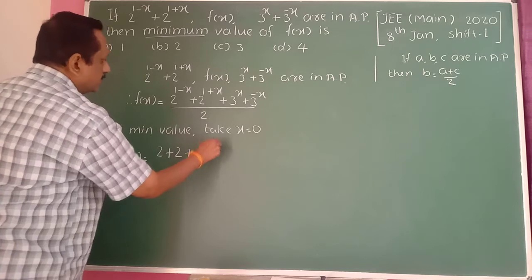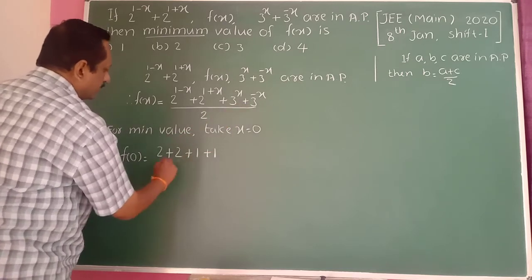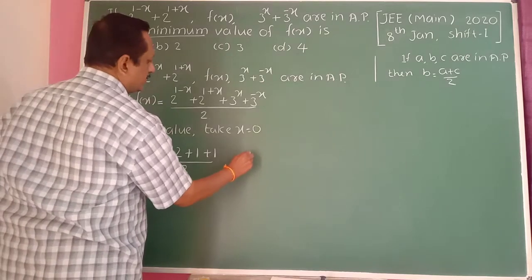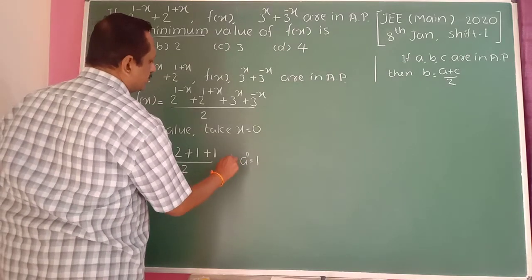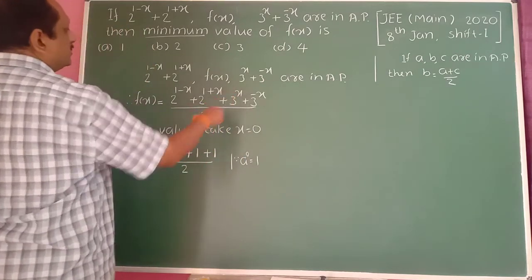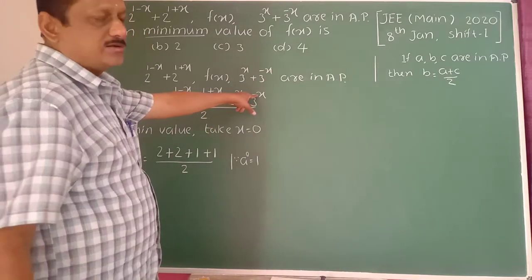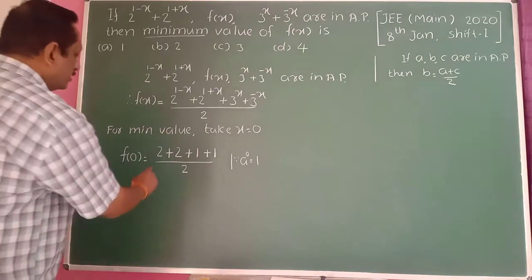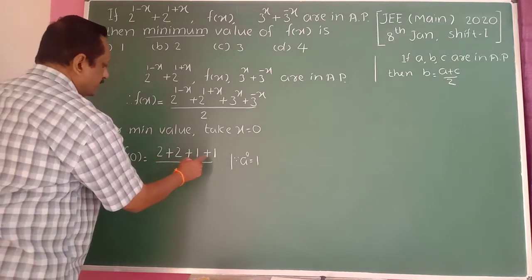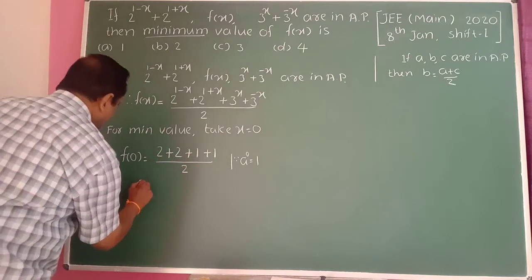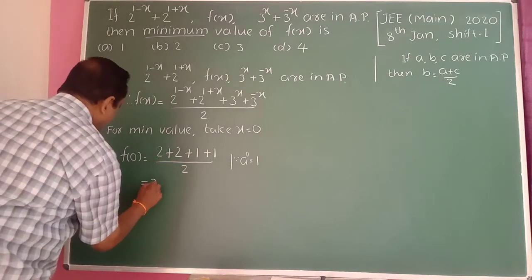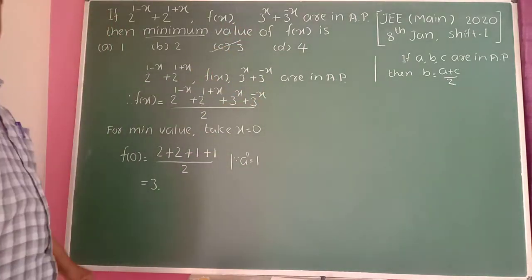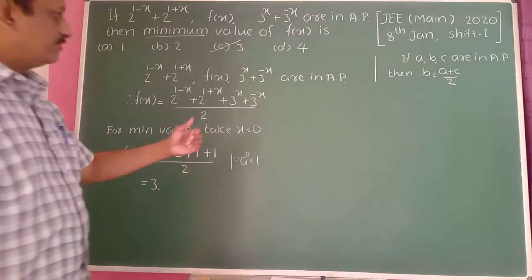F of 0 equals 2 plus 2 plus 1 plus 1 divided by 2, giving the minimum value. The correct option is obtained at this point.